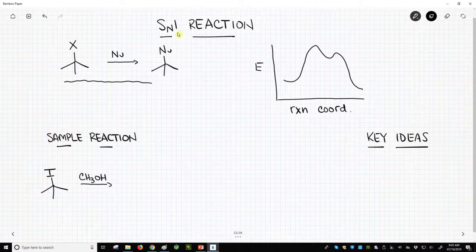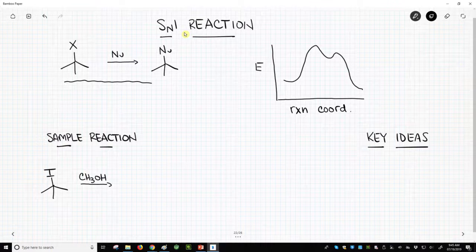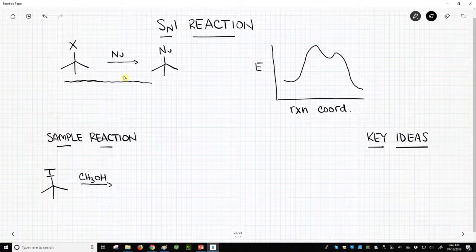The 1 means it is unimolecular in the rate determining step, and we'll talk about what this is. But this is a substitution, and as such, it looks a lot like an SN2, because both of them result in a net substitution.